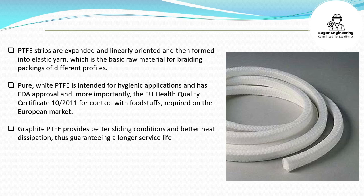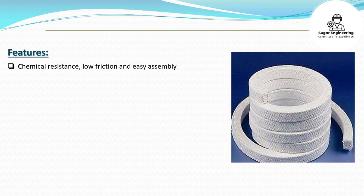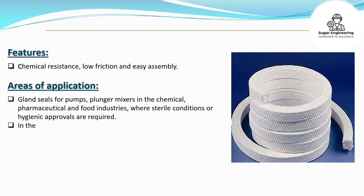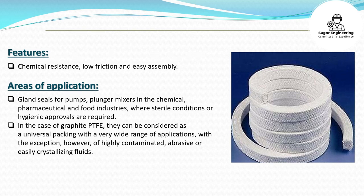Graphite PTFE provides better sliding conditions and better heat dissipation, thus guaranteeing a longer service life and can be used in a higher range of both shaft pressure and shaft speed. Features: chemical resistance, low friction and easy assembly. Areas of application: gland seals for pumps, plunger mixers in the chemical, pharmaceutical and food industries, where sterile conditions or hygienic approvals are required. In the case of graphite PTFE, it can be considered a universal packing with a very wide range of applications, with the exception of highly contaminated, abrasive or easily crystallizing fluids.